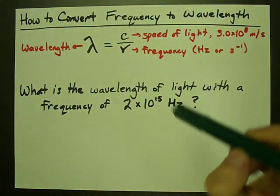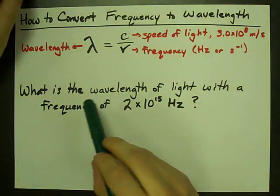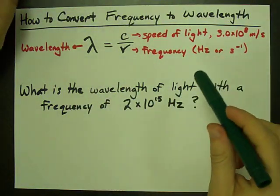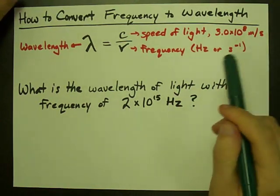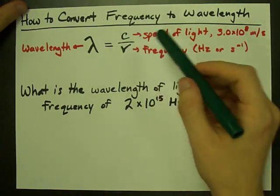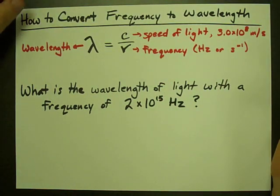How do you convert a frequency into the wavelength of light? What is the wavelength of light if it has a given frequency? Short answer: take the speed of light, 3.0 times 10 to the 8 meters per second, and divide it by the frequency.